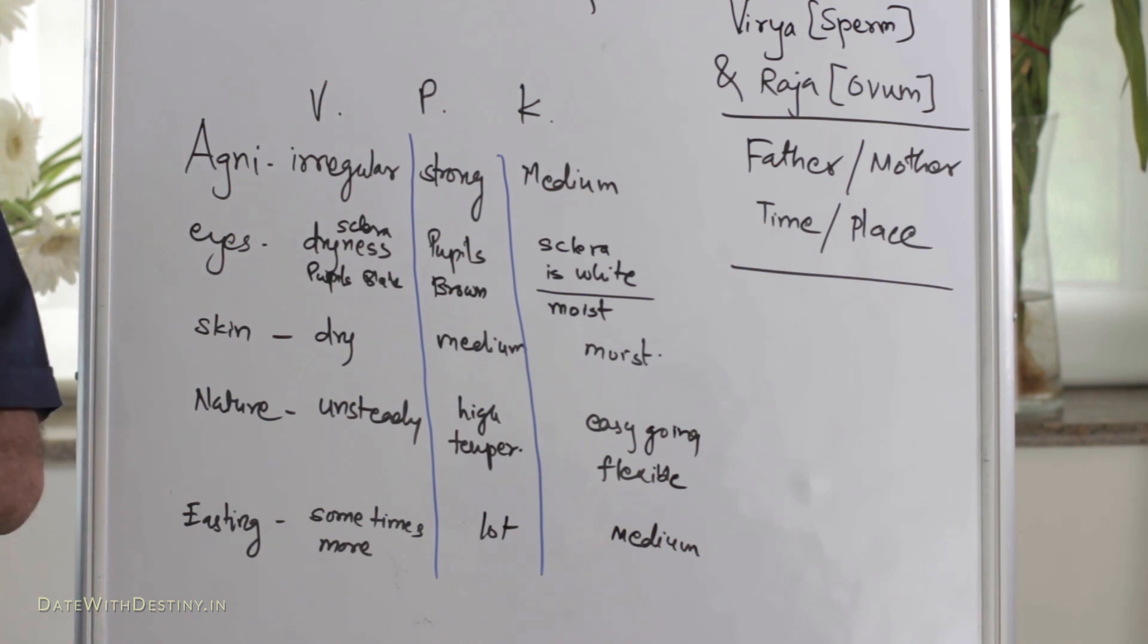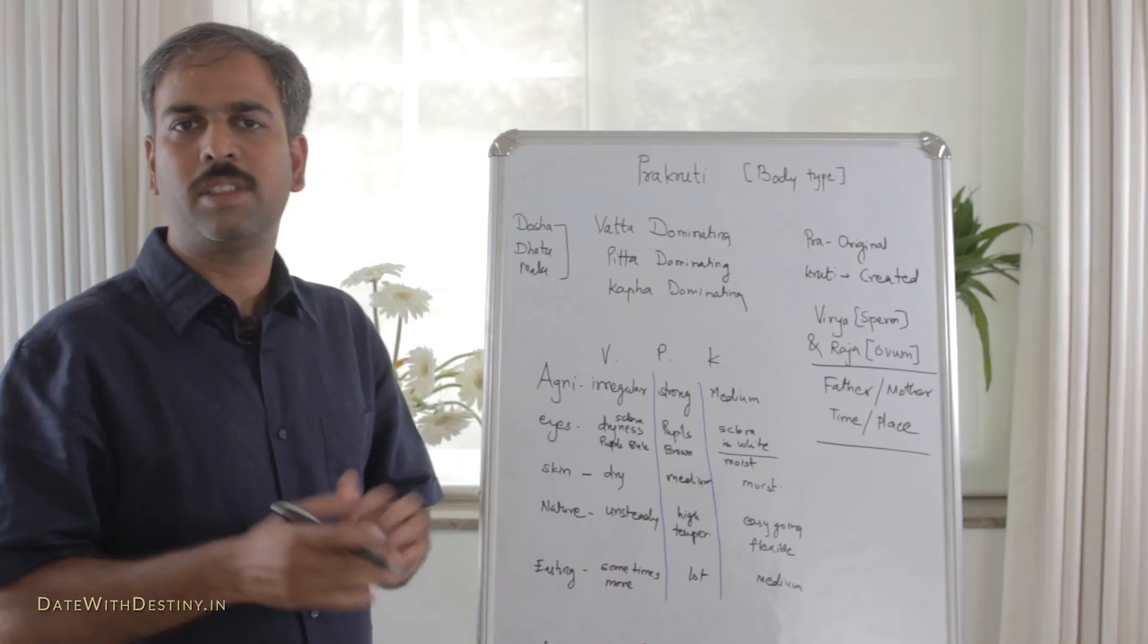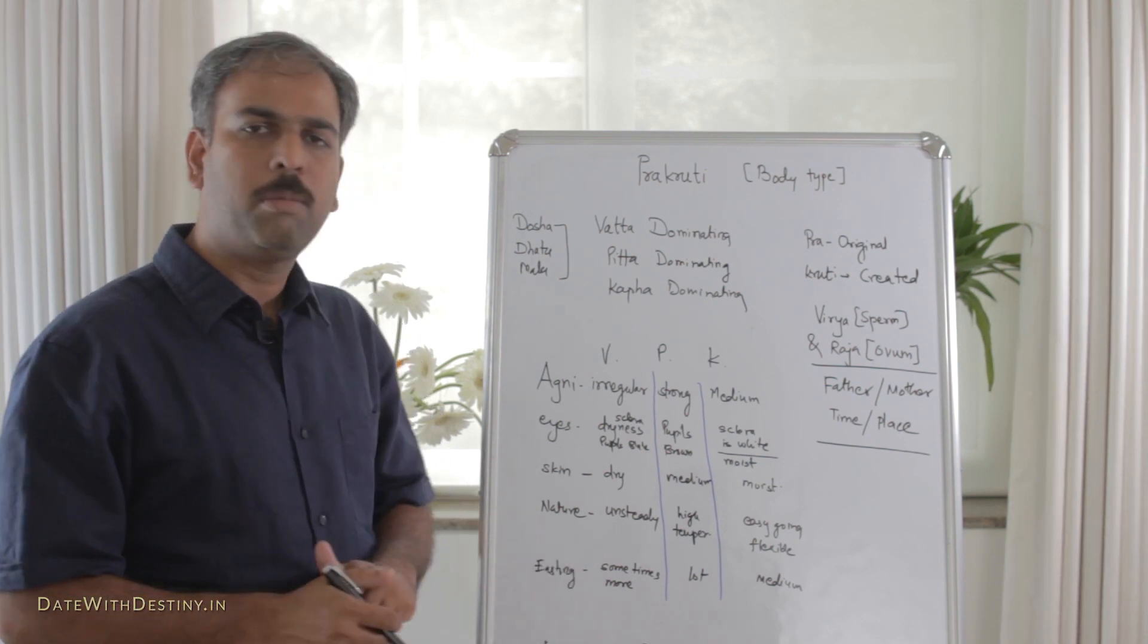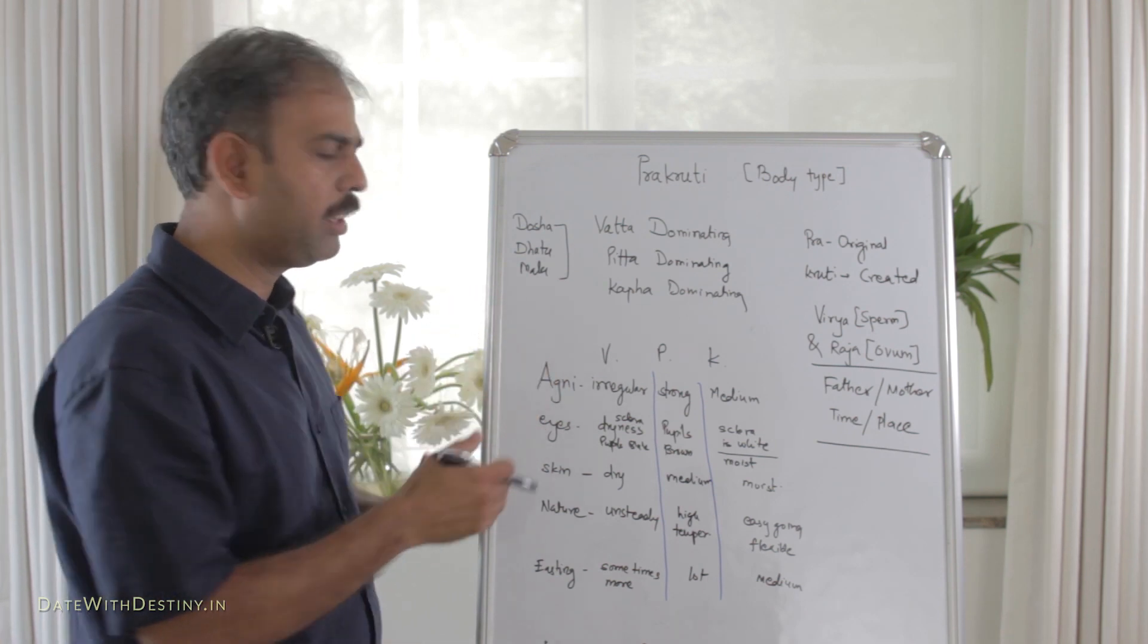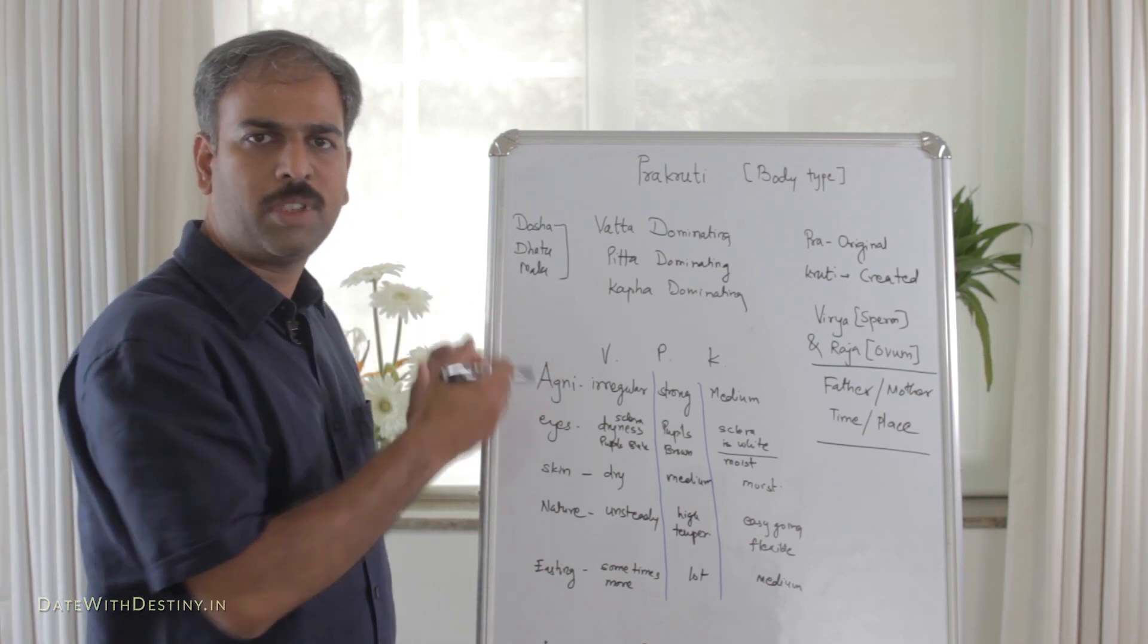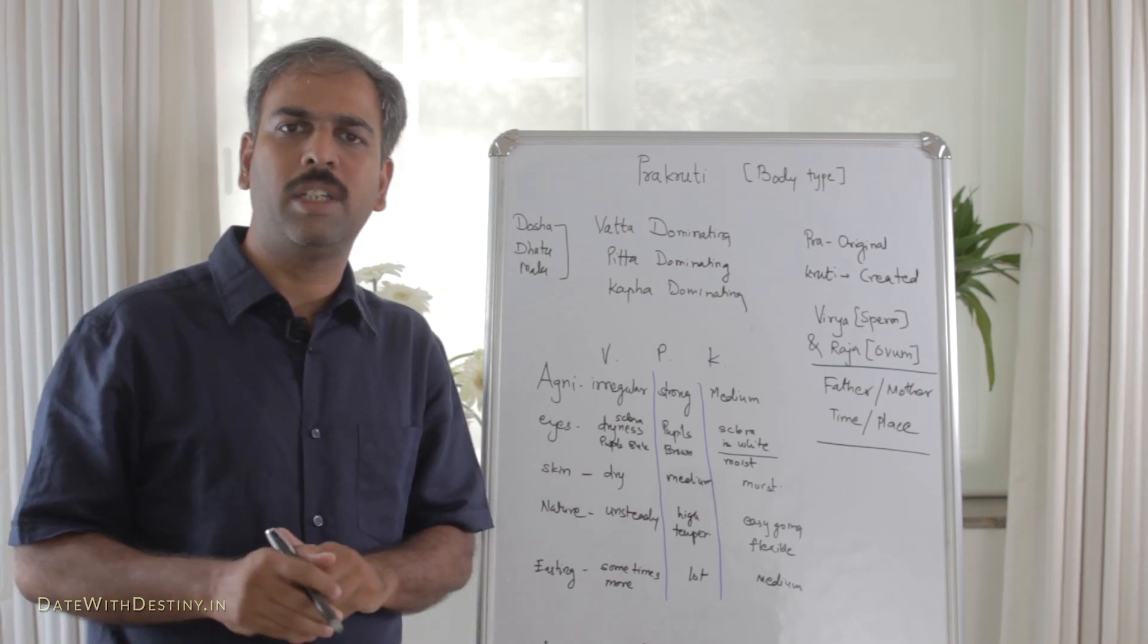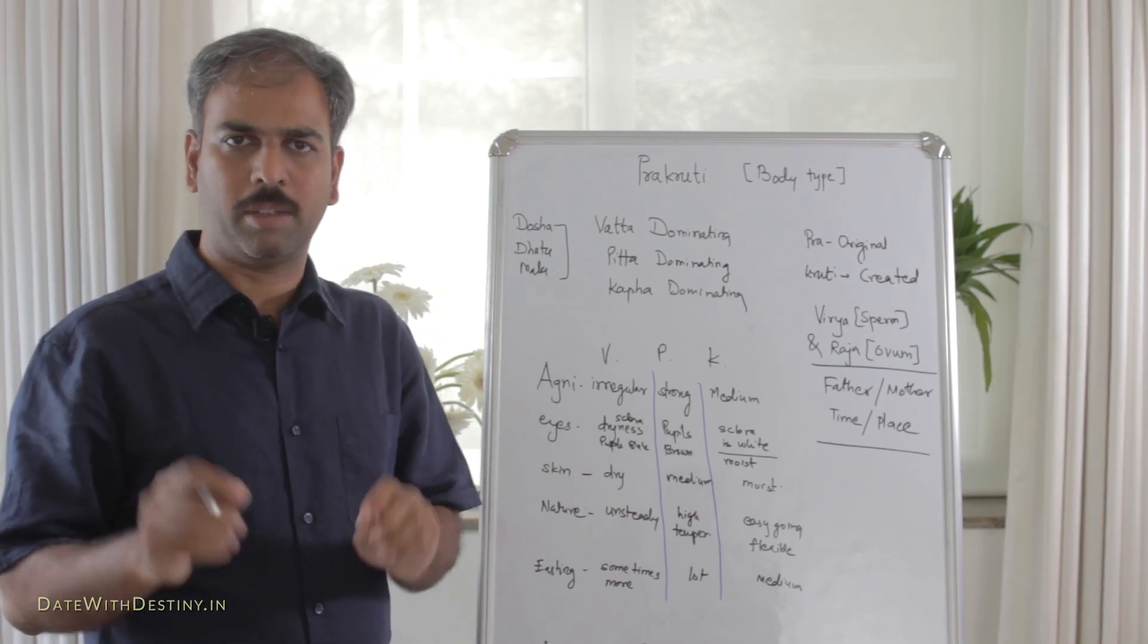And the last, eating habits. With Vata Prakruti, sometimes he eats a lot, sometimes he doesn't. With Pitta Prakruti, he has great hunger, as we have seen in this first point. So he will eat a lot. While with Kapha Prakruti, he will only eat medium.